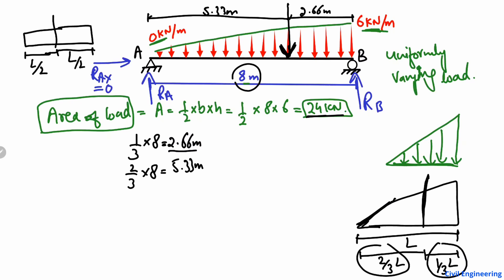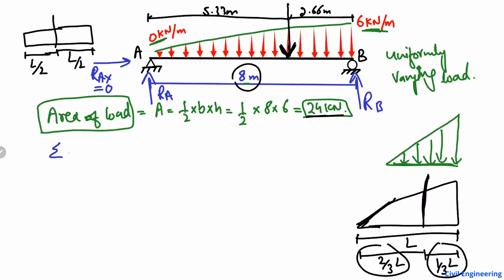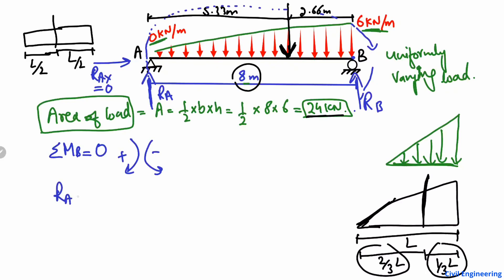Using the moment equation: summation of moments at point B equals zero. All forces that create moment about point B are considered. Let's assume clockwise is positive and anti-clockwise is negative. RA acting upward creates a clockwise moment about B, so RA multiplied by its moment arm of 8 meters is positive.